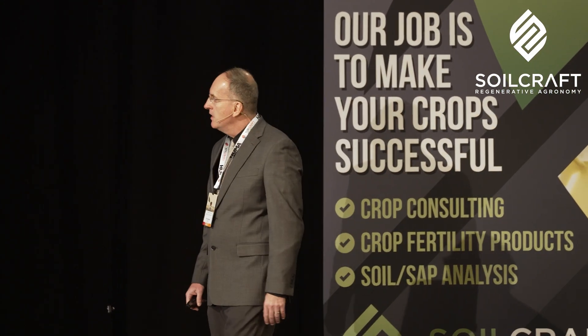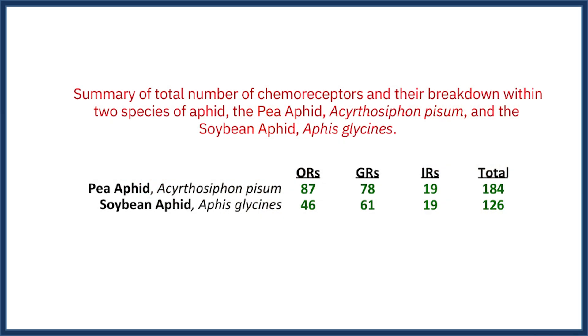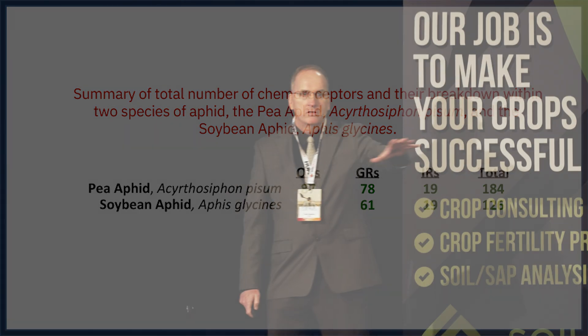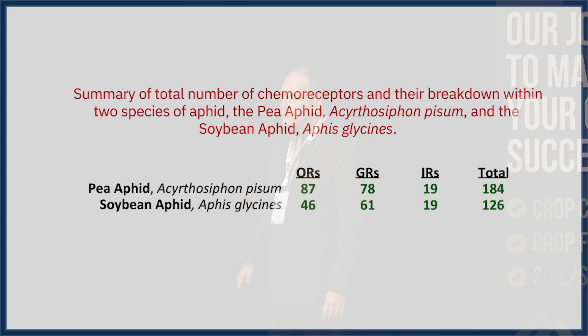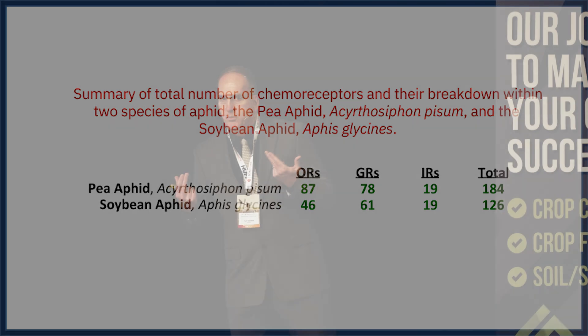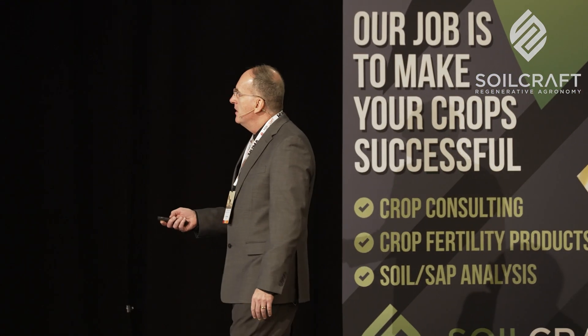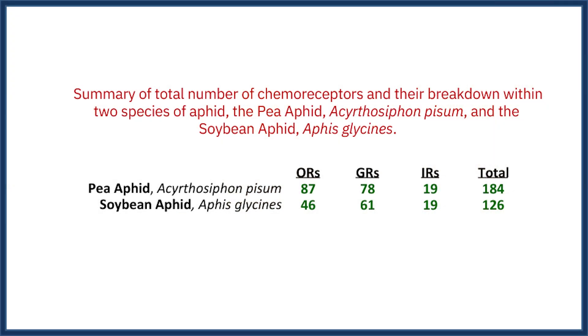The soybean aphid has chemoreceptors that are more focused towards the soybean plant. That's why you see practically half of the odorant receptors — the ORs — from the pea aphid, because when the soybean aphid is in search mode using its odorant receptors, it is looking specifically for the soybean plant, and also for a low-quality soybean plant. It will pass over high-quality soybean plants. The GRs — the gustatory receptors — are the taste receptors. Once the aphid is on the plant, it uses those taste receptors to taste the plant and assess whether it is adequate. The IRs, the ionotropic receptors, I'm not going to discuss today. There are 19 of them in each, for totals of 184 and 126.